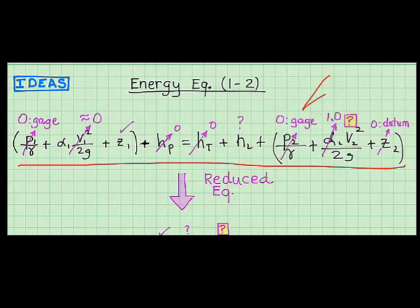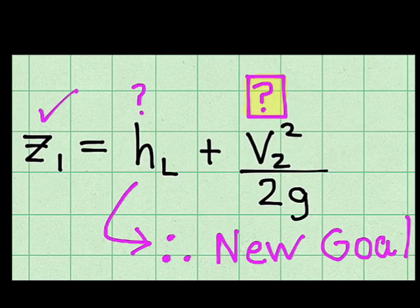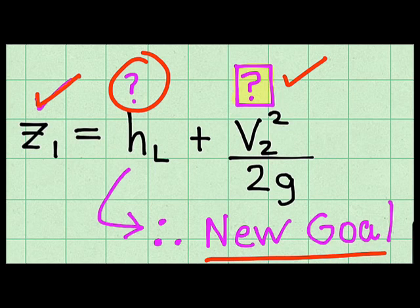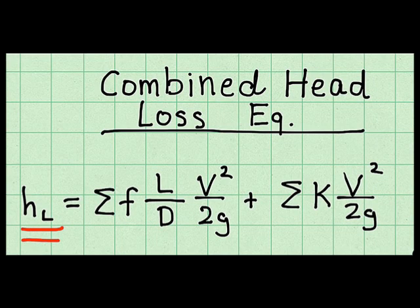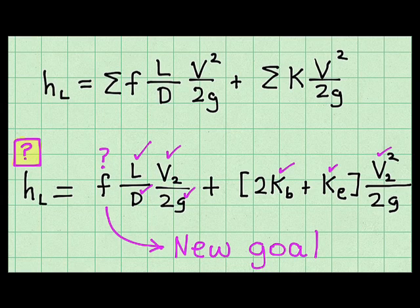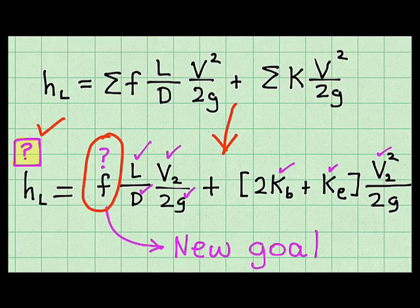I write the general form of the energy equation, then perform term-by-term analysis shown in purple, which leads to my reduced equation. The reduced equation tells me that the elevation head at section 1 is balanced by the head loss in the system plus the velocity head at section 2. The elevation head at 1 is known, but the head loss is unknown, so finding the total head loss becomes my new goal. I apply the combined head loss equation, which shows that total head loss equals pipe losses plus losses in components and transitions. After substituting in terms, all variables are known except the friction factor, making that my next goal.